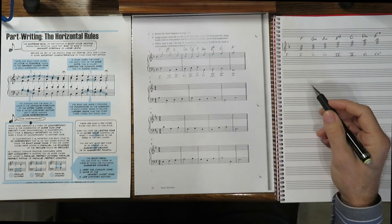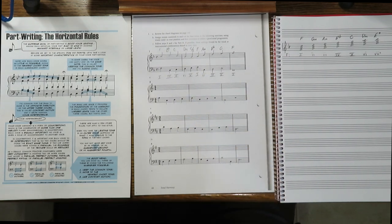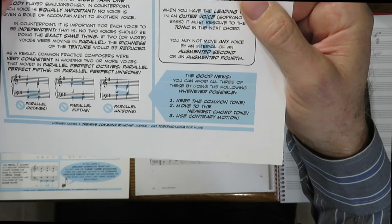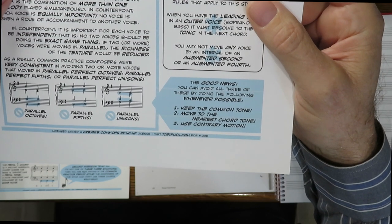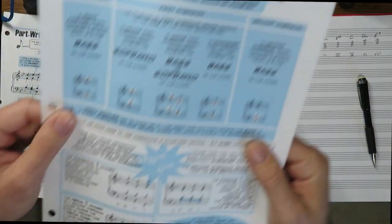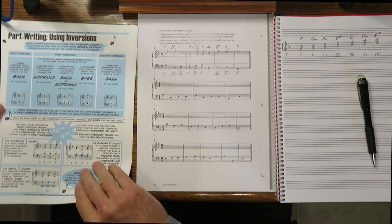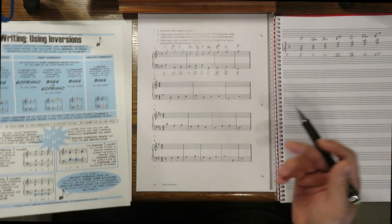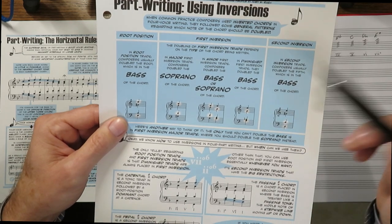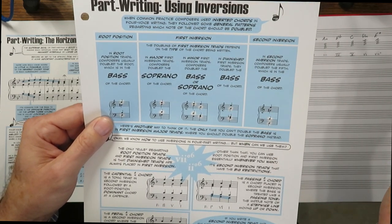Now that we have a melody we like and a chord progression, we can begin to fill in the inner voices. Remembering our part-writing rules from Toby Rush — keep the common tone, move to the nearest chord tone, and use contrary motion. For doubling rules: in root position triads, composers double the bass of the chord. In major first inversion, composers double the soprano — whatever note is in the soprano. In minor first inversion, you get your choice: the bass or soprano.